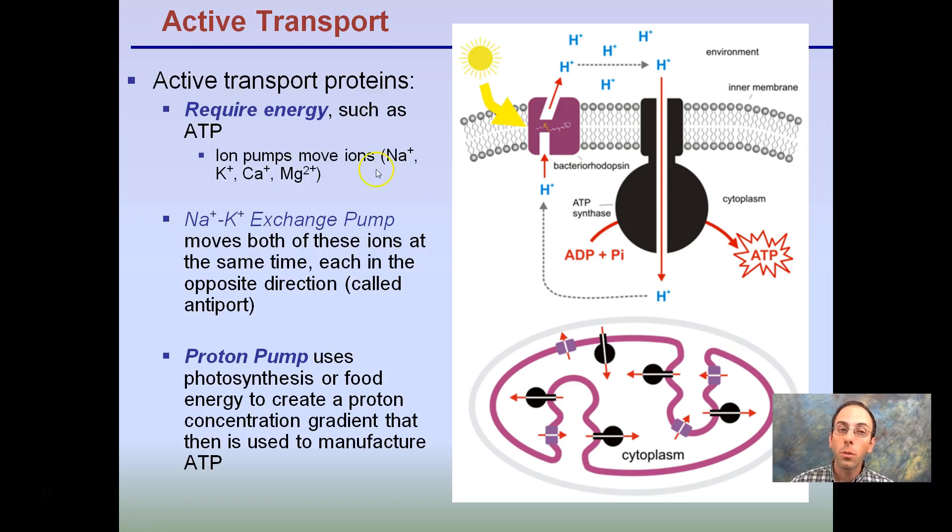Our active transport, requiring energy, ion pumps can move sodium ions, potassium ions, calcium ions, magnesium ions. Potassium and sodium exchange pump is a very common pump. These proton pumps are moving hydrogen ions, as we see here. It uses photosynthesis or food energy to create a proton concentration gradient that then is used to manufacture ATP. So this higher hydrogen ion concentration, this higher proton concentration,